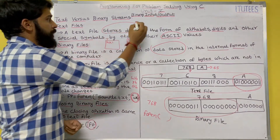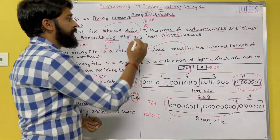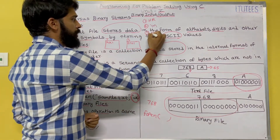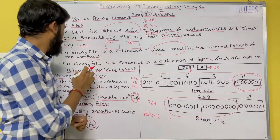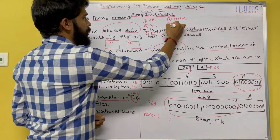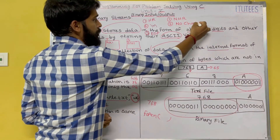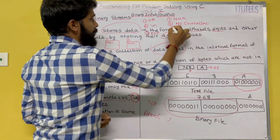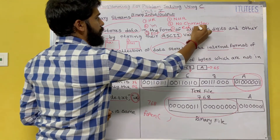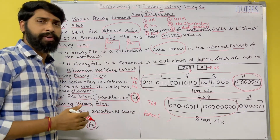The differences between text and binary files: text files are human-readable and have a special EOF character to identify the end of the file. Binary files are not human-readable, there are no lines or newline characters, and the end of the file is identified using an EOF marker.